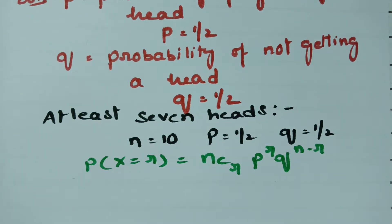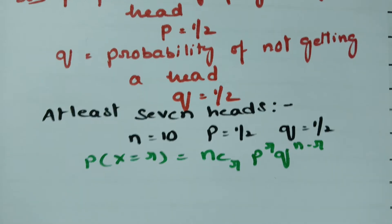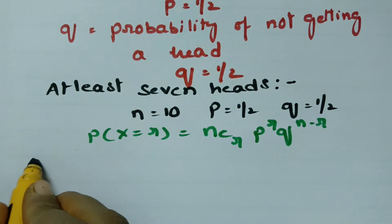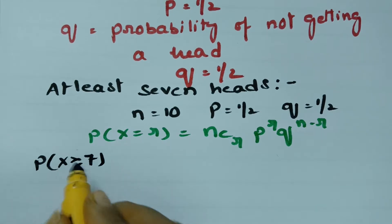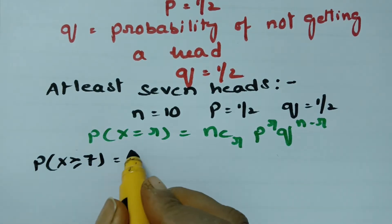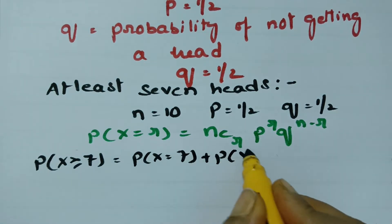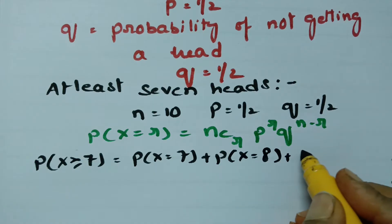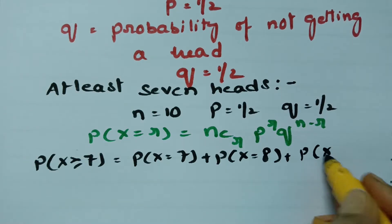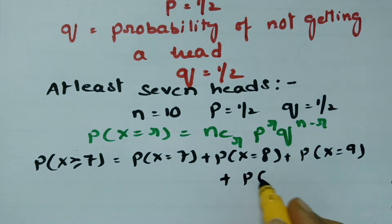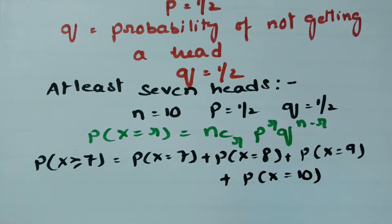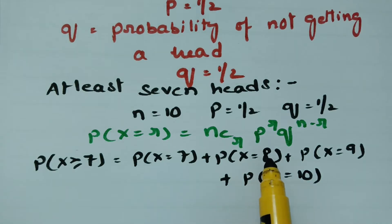At least 7 means it can be 7, 8, 9, or 10 — maximum there are 10 chances. So at least 7 means the probability of X greater than or equal to 7, which equals probability of X equal to 7, plus probability of X equal to 8, plus probability of X equal to 9, plus probability of X equal to 10. Here R equals 7, 8, 9, and 10 respectively.